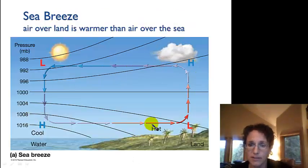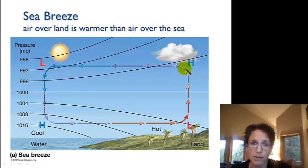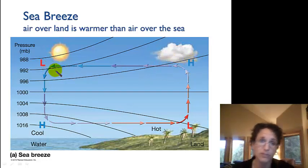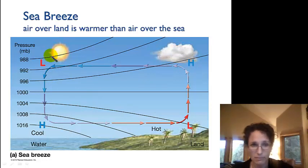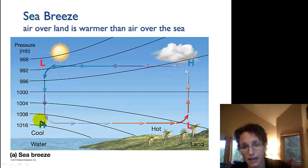Back to our sea breeze example — here's the cycle we've set up. Our warm air is at higher pressure; in this example we're more than 996 millibars. At the same elevation in the colder air, we're less than 992 millibars. So that air is going to move from high pressure to low pressure. Here it's colder, so it's going to sink, and air continues to move from high pressure to low pressure.